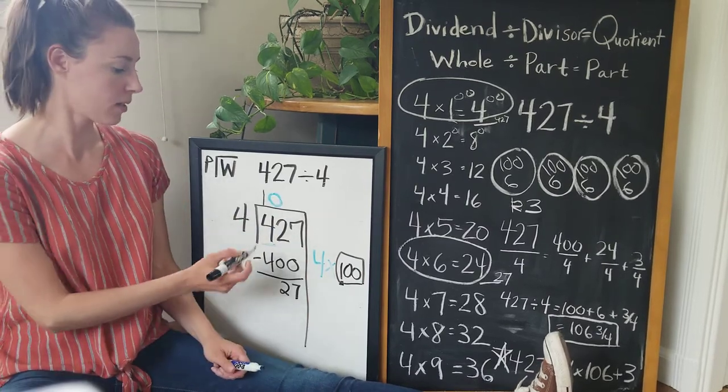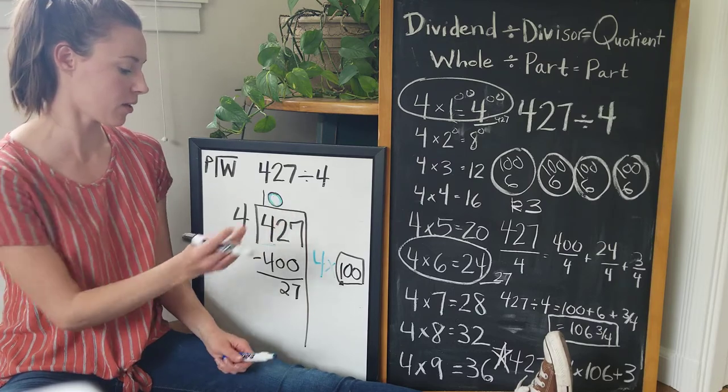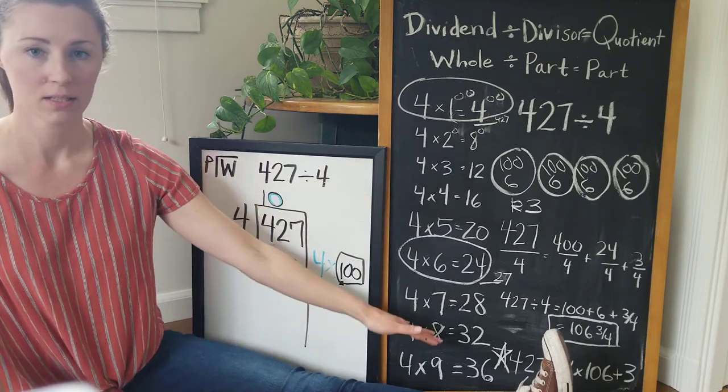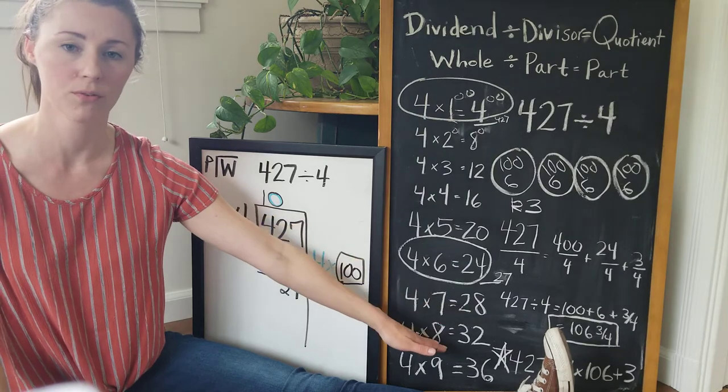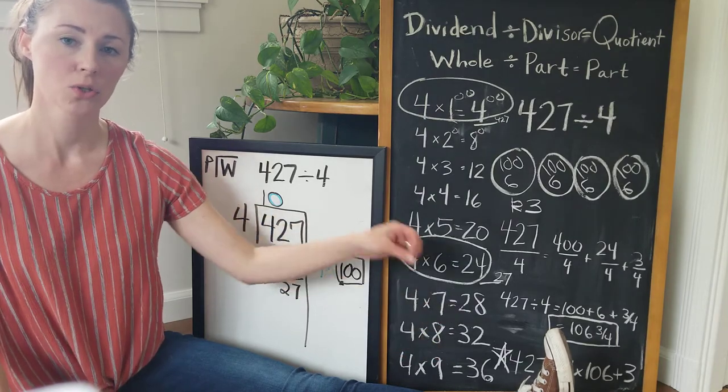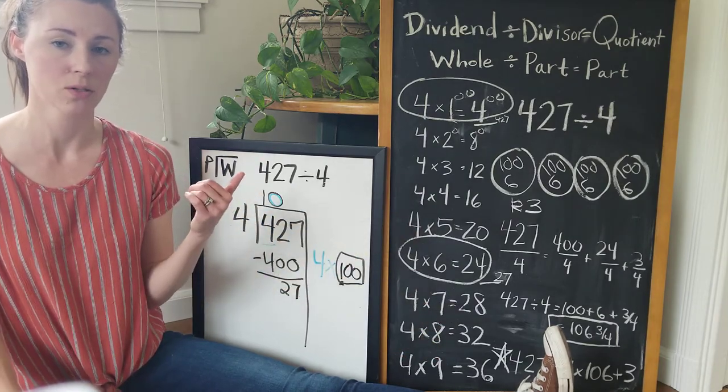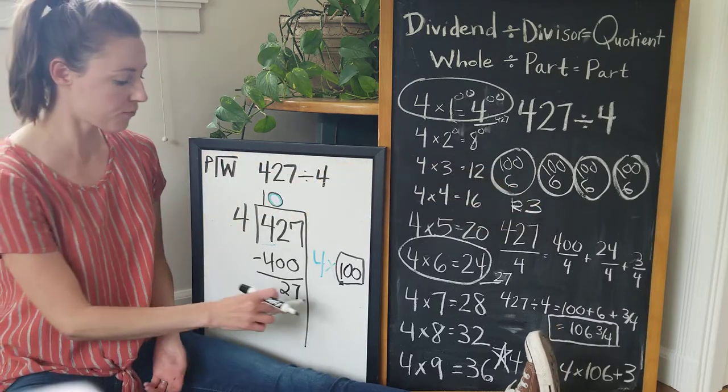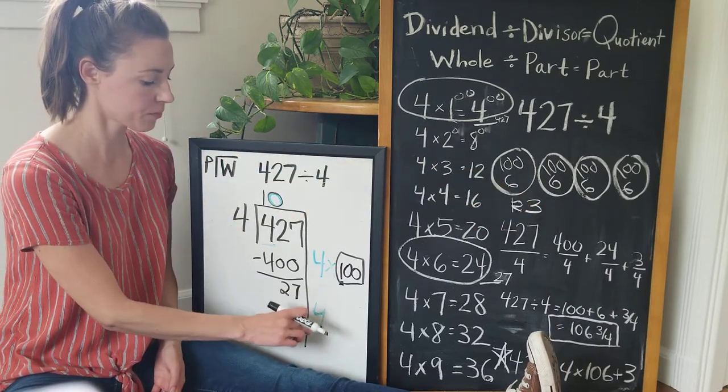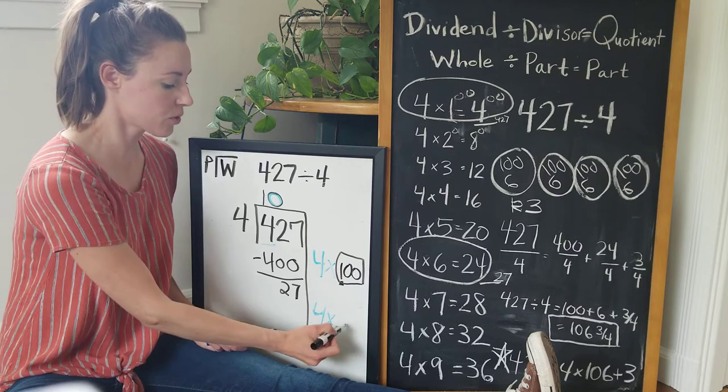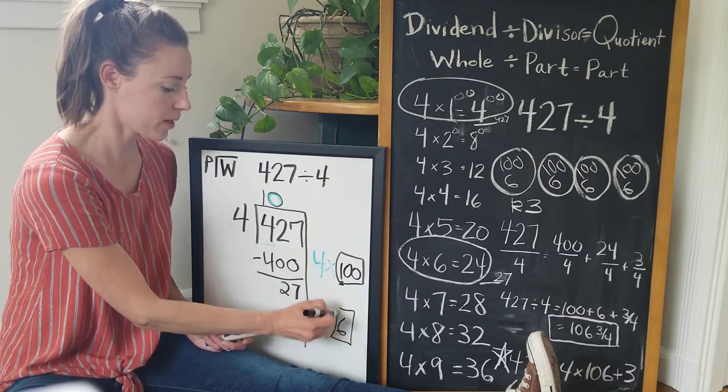And then I think, okay, single digit facts: four times six is 24, four times seven is 28. 27 is right in between there, so I can give each child six dollars. That would be four groups of six and that's a total of 24.